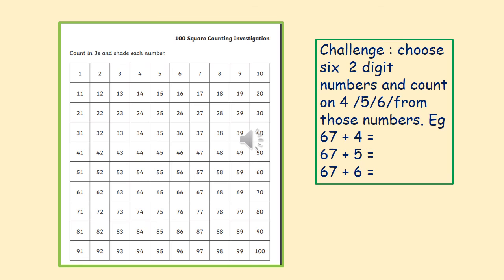See what happens. For an extra challenge, choose 6 two digit numbers and count on 4, 5 or 6 from those numbers. For example, 67 count on 4 equals, and then you can do it for 5 and 6.